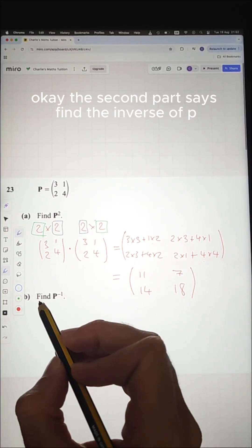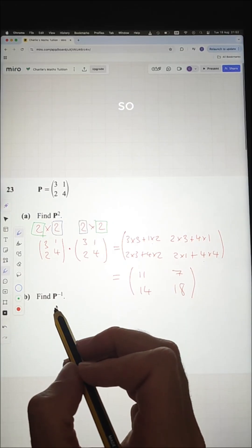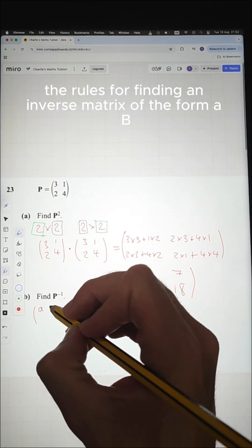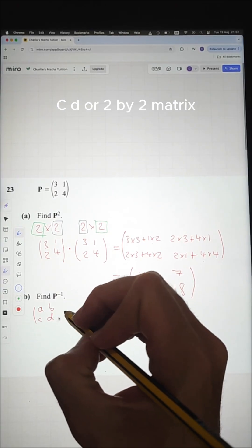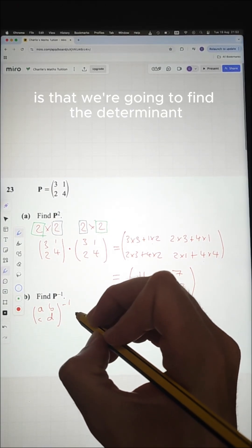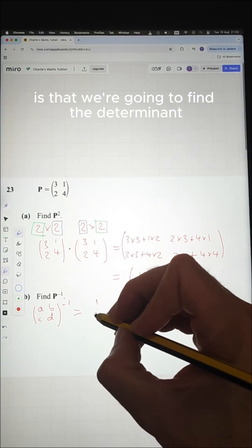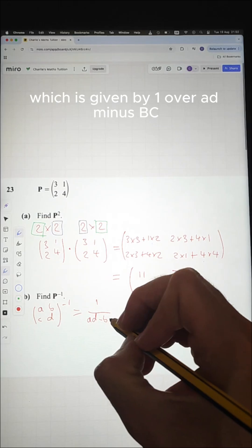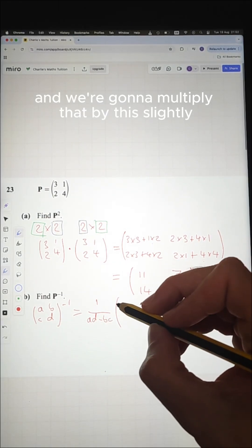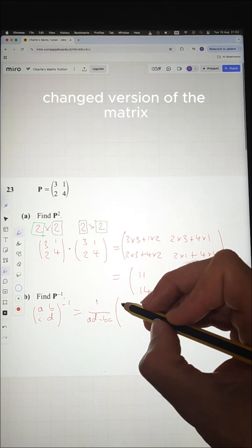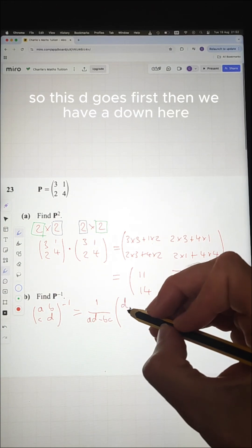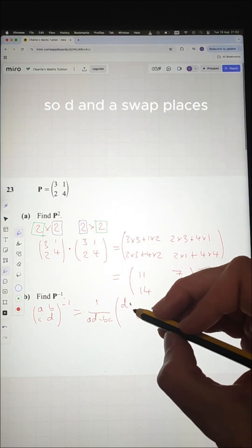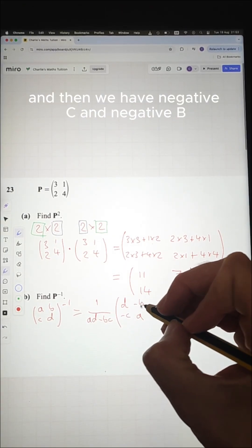Okay, the second part says find the inverse of P. So the rules of finding an inverse matrix of the form A, B, C, D, or two by two matrix, is that we're going to find the determinant which is given by one over A D minus B C. And we're going to multiply that by this slightly changed version of the matrix. So this D goes first, then we have A down here. So D and A swap places and then we have negative C and negative B.